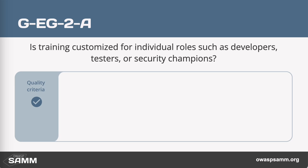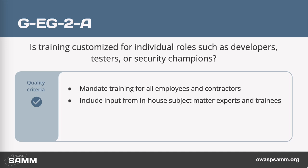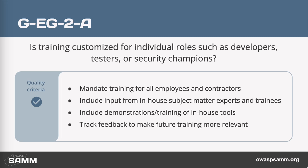Moving to level two, you have customized the trainings. Completing it is expected — not a nice thing if you have time to do, but mandatory for all employees and contractors. You should identify subject matter experts in each technology to assist with procuring or developing the training content and update it regularly. You focus your trainings on the tooling used at your organization, and you poll participants and use their feedback to evaluate the quality and relevance of each training.